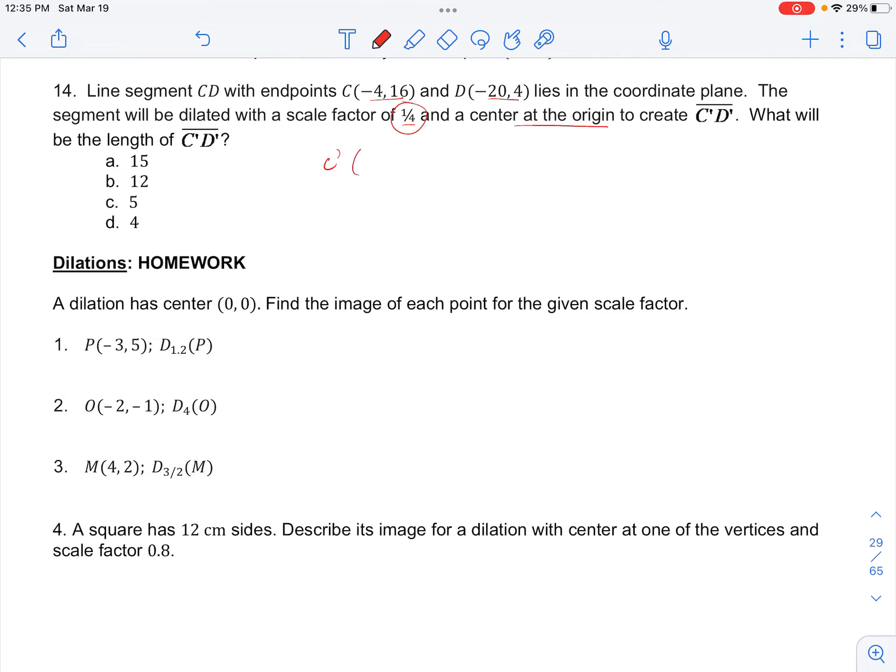So C prime will be at -4 times 1/4, which is -1, and 16 will change to 4. Then D prime will be at -20 times 1/4, which is -5, and then 4 times 1/4 is 1.